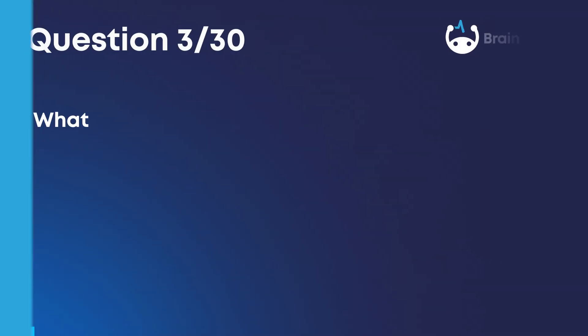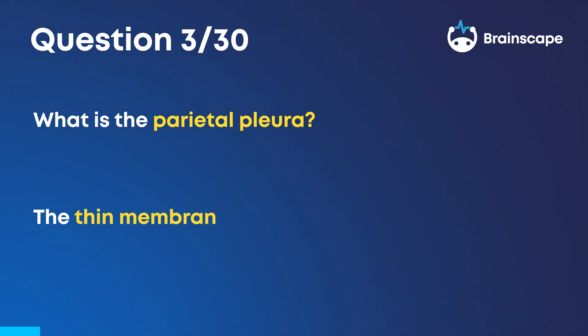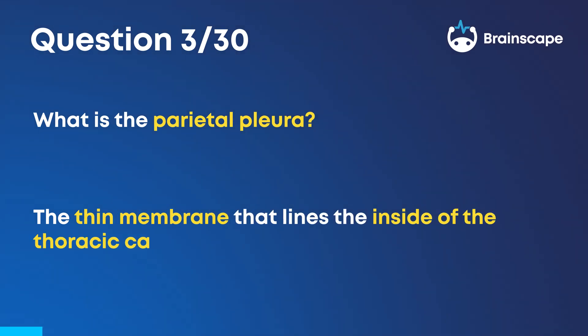Question 3. What is the parietal pleura? The thin membrane that lines the inside of the thoracic cavity.